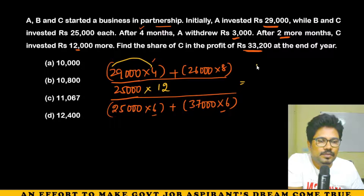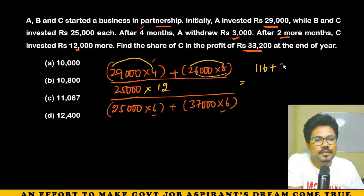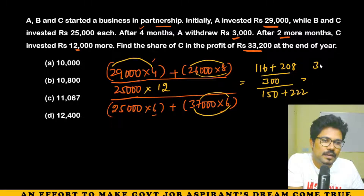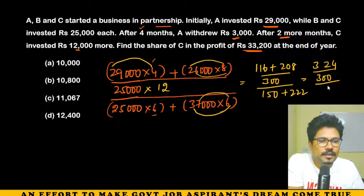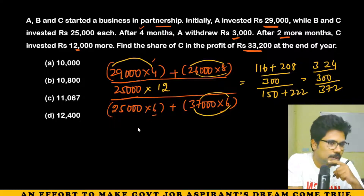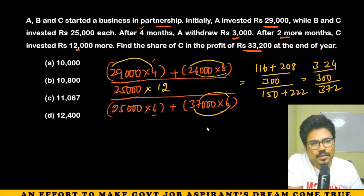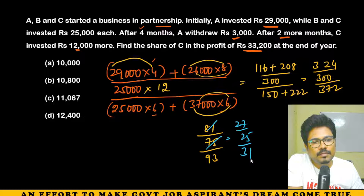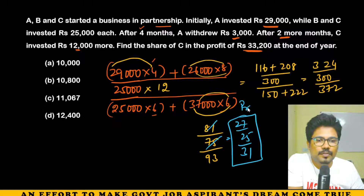Calculating profit contributions — A: 29,000×4 + 26,000×8 = 116,000 + 208,000 = 324,000. B: 25,000×12 = 300,000. C: 25,000×6 + 37,000×6 = 150,000 + 222,000 = 372,000. Dividing by 4 for simplification gives ratio 81 : 75 : 93. Further simplifying by 3 gives 27 : 25 : 31. This is the profit ratio.